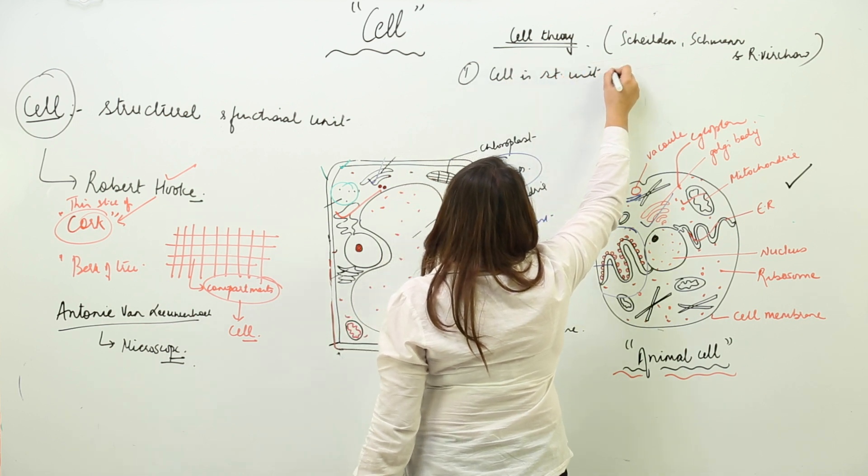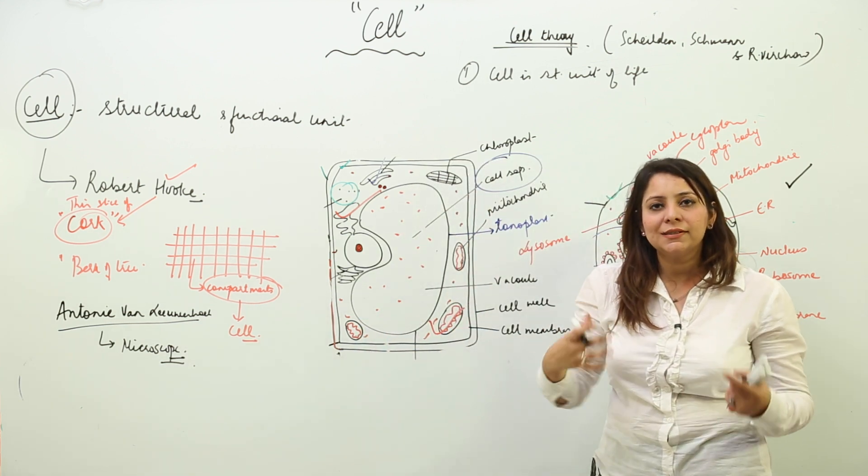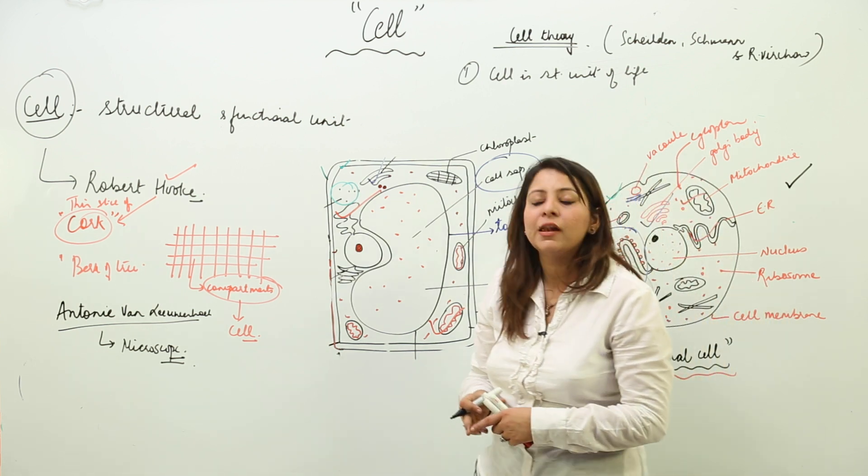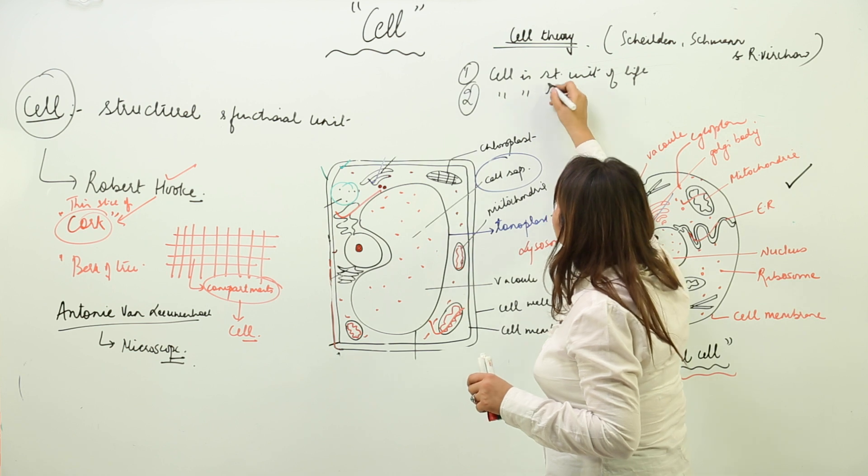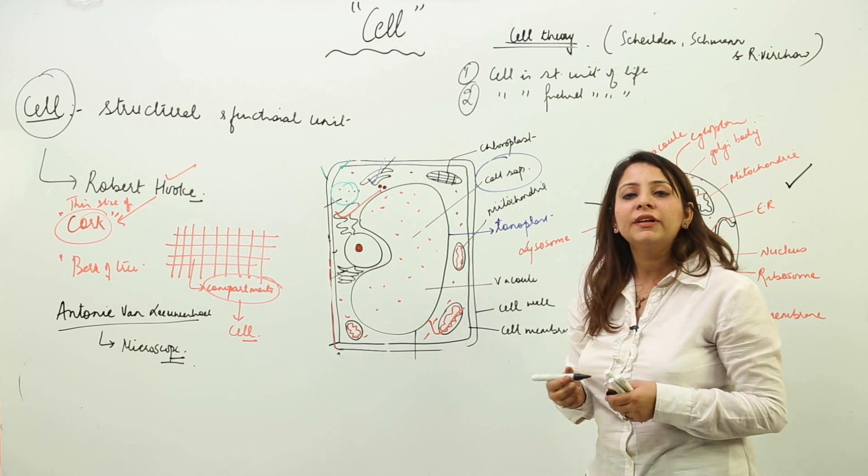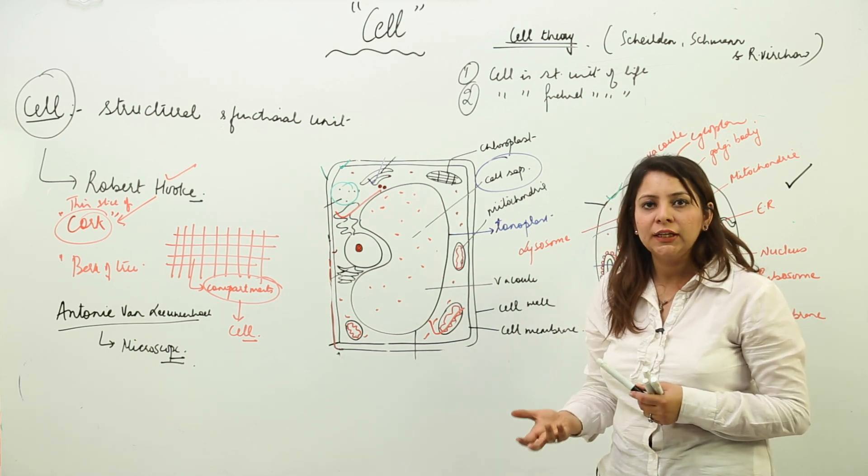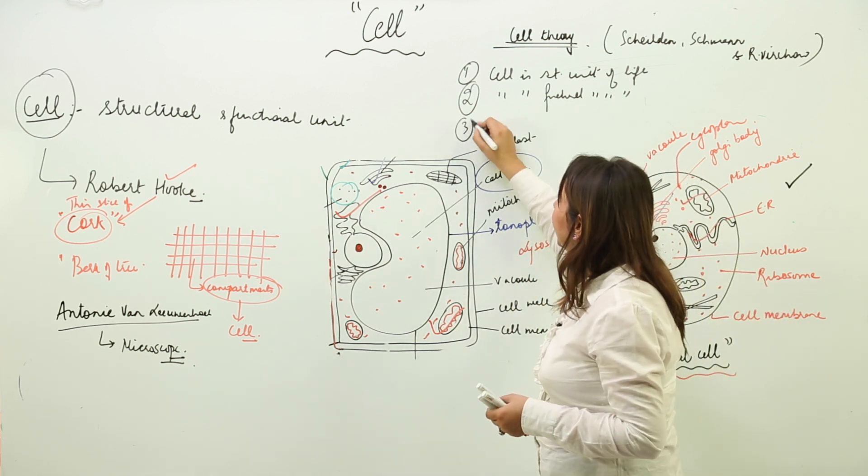A point was added by Rudolf Virchow. What does this theory state? This theory states that cell is structural unit of life. Our body has a certain structure and that structure is composed of a unit that is called as a cell. Likewise, cell is a functional unit of life.